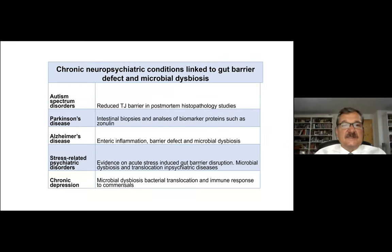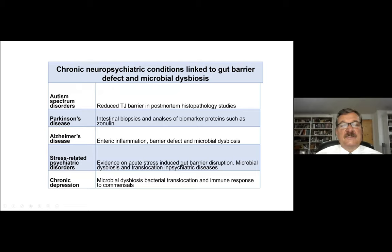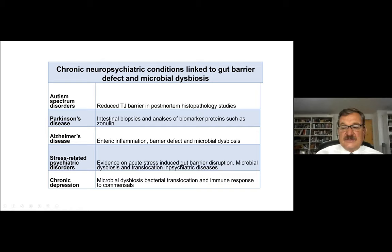The third group of diseases are chronic neuropsychiatric conditions linked to gut barrier defect and microbiome dysbiosis. The level of evidence is somewhat less, but it is very important to follow these diseases, whose prevalence is also increasing. They all show barrier defects, certain barrier-related biomarker proteins, and microbiome dysbiosis in the gut. These include autism spectrum disorders, Parkinson's disease, Alzheimer's disease, stress-related psychiatric disorders, and chronic depression.